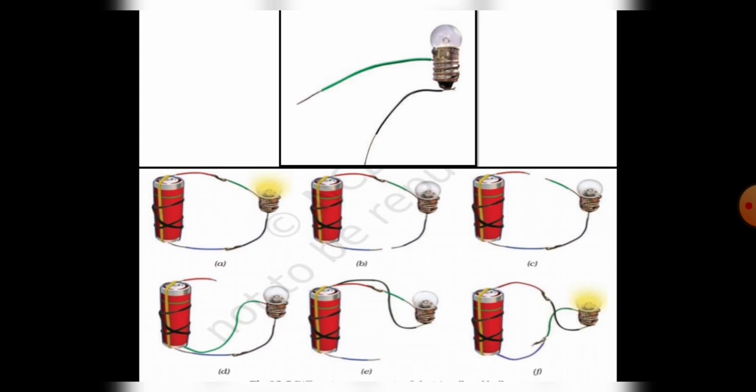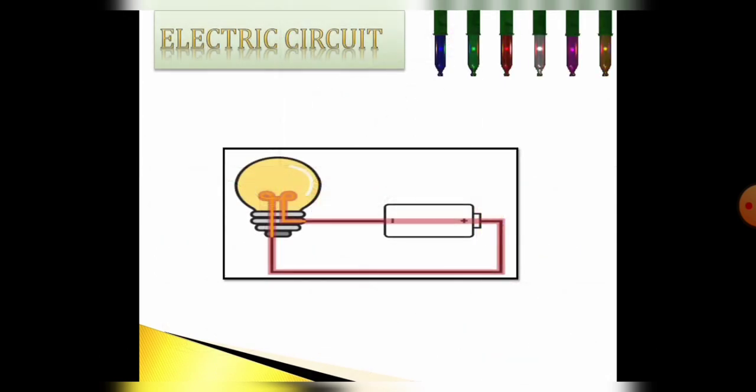Now aap clearly observe kar sakte ho ki bulb sirf condition A and condition F mein hi glow karega, kyunki in dono condition mein circuit complete hai. Now what is this circuit? So let's discuss the electric circuit.